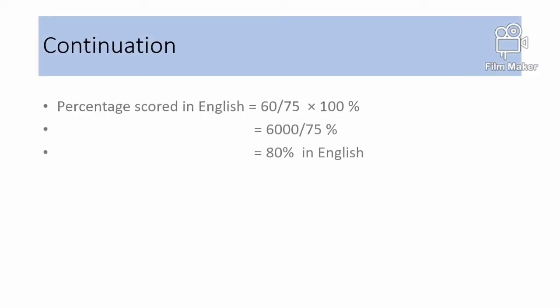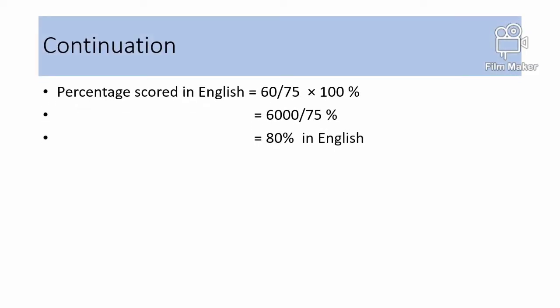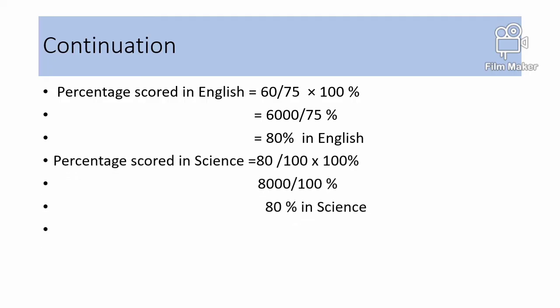Continuation. Percentage in English: 60 out of 75 times 100% equals 6,000 divided by 75, and the answer is 80% in English. So the person's score in English is 80%. Person's score in science: 50 out of a possible score, times 100%, gives an answer of 80% in science as well.